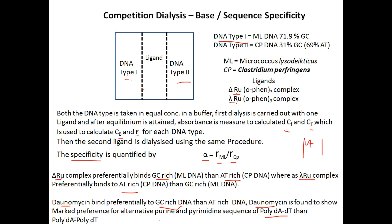In poly d(A-T), the sequence alternates A-T-A-T on the double-stranded DNA, whereas in poly dA·poly dT, one entire strand is poly-A and the other is poly-T. Daunomycin shows preferential binding toward the alternating AT sequence — poly d(A-T) — binding more strongly than to the non-alternating poly dA·poly dT. This demonstrates that competition dialysis can determine which sequence arrangement of DNA a ligand preferentially binds.